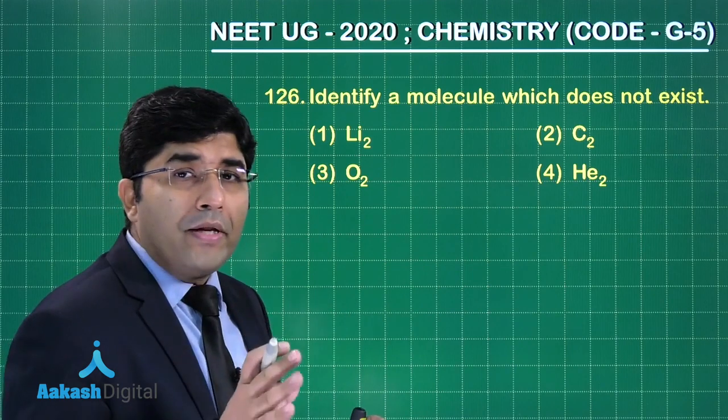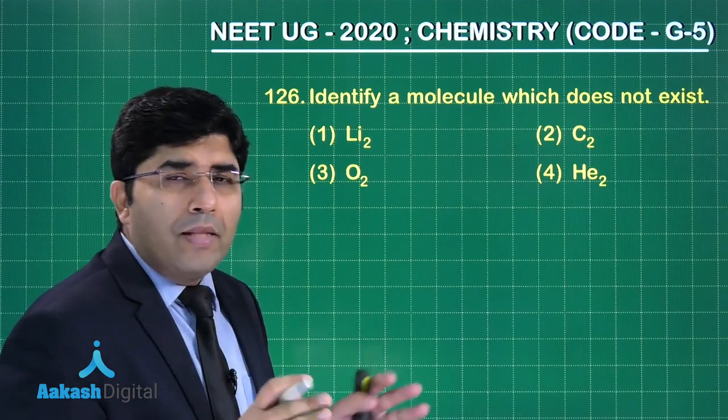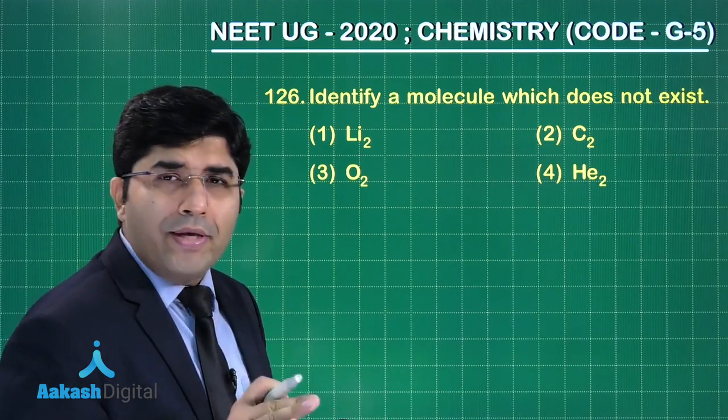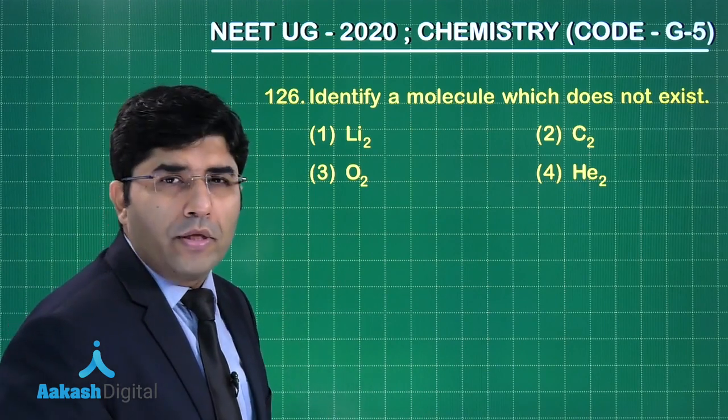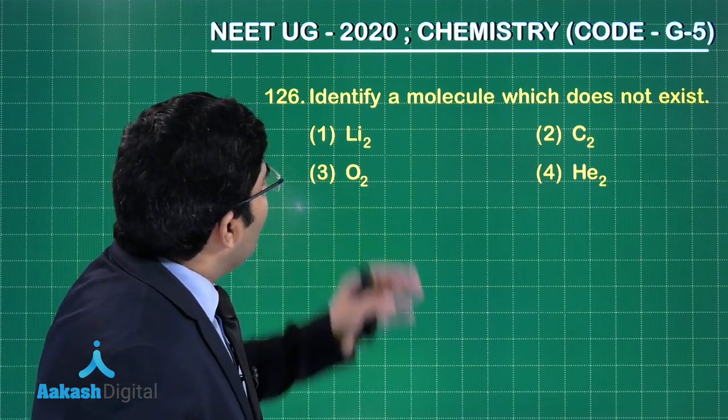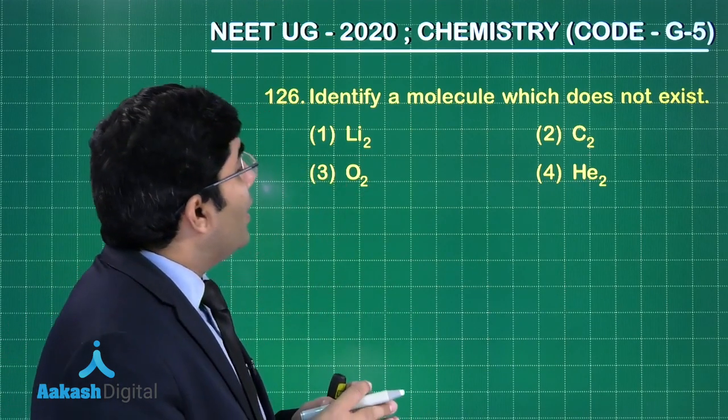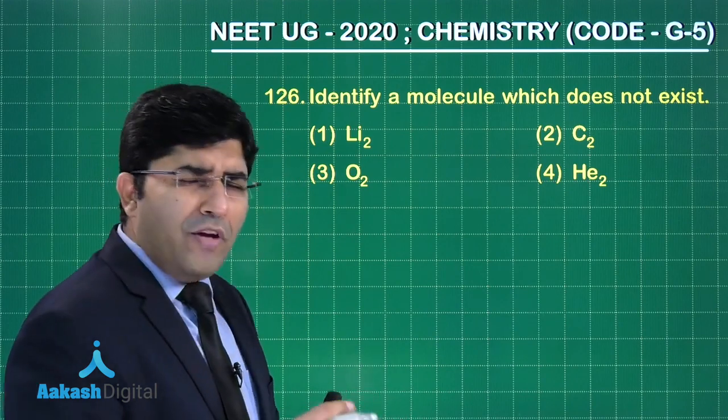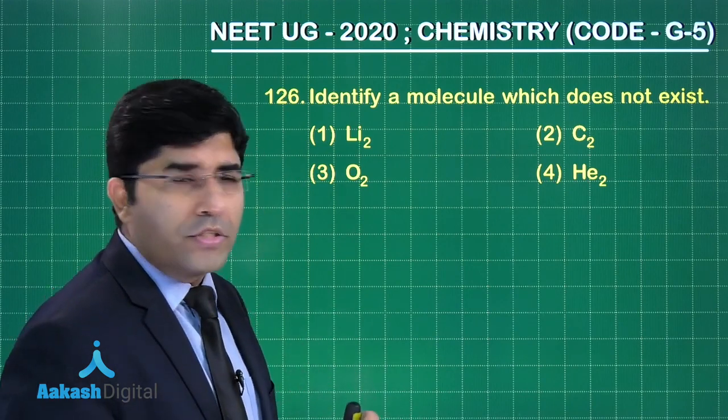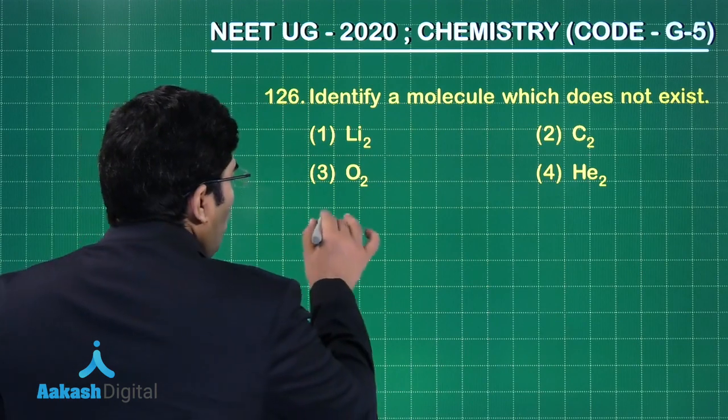This is a question from the chapter chemical bonding and molecular structure, and the topic is molecular orbital theory. The question is: identify a molecule which does not exist. So we have to find out the bond order first.